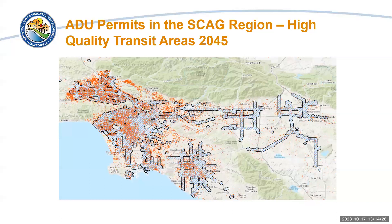Where are these ADUs located? In the SCAG region, they're really located throughout the region, particularly on the west side. According to the data, there have been close to 30,000 ADUs permitted since 2018 that are within areas identified by SCAG as high quality transit areas in 2045. ADUs help increase density in areas with existing residential uses and infrastructure. The address data collected on the APR helps us geolocate the data and do deeper analysis of the spatial distribution of housing developments.